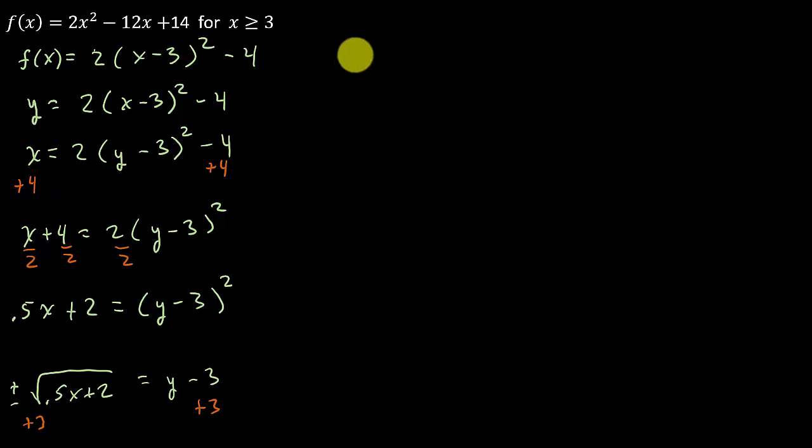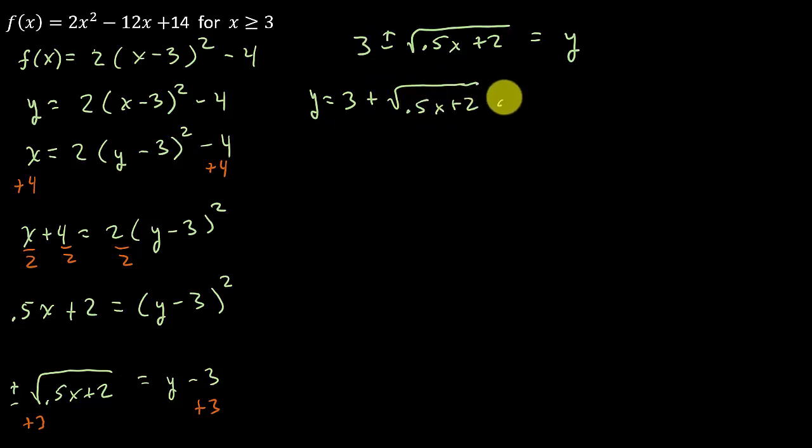And so then I need to add 3 to both sides. And so that is going to give me 3 plus or minus the square root of 0.5x plus 2 equals y. Alright. So now I'm going to take this and split it up into two separate functions. So that's y equals 3 plus the square root of 0.5x plus 2.